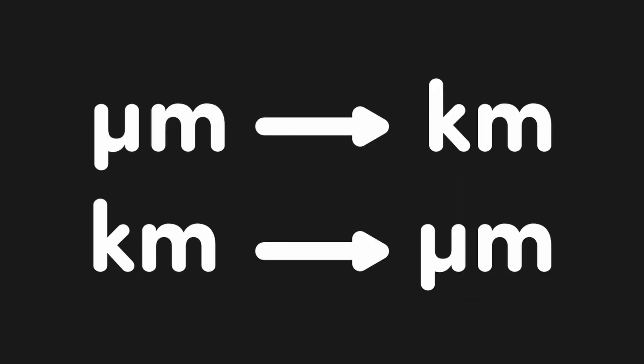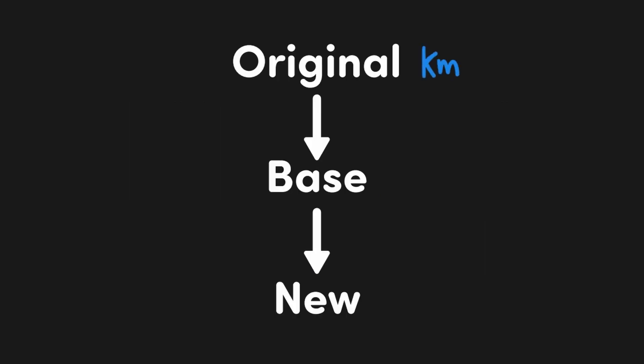We've avoided converting scientific notation into SI prefixes so far, but what if you absolutely need to do so — for example, converting micrometers to kilometers or vice versa? For this, we can use the inverse trick. The trick has two steps: first, convert the original value into base units without an SI prefix; then add in the SI prefix you want and multiply your value by that SI value's inverse. Let's spend some time on the second step and discuss why this technique works.